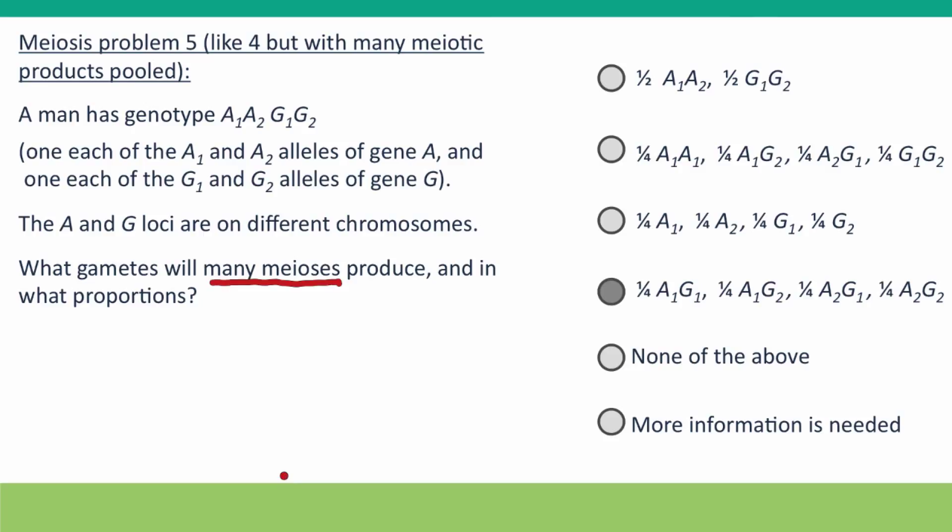And the situation was the same as before, but the answer is different. Now we know what the outcome is going to be. We're going to get a quarter of each of four different genotypes, and the reason is that...